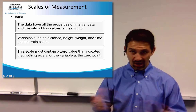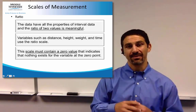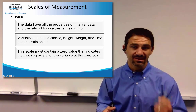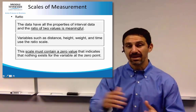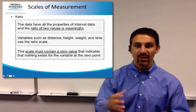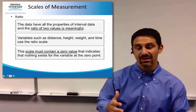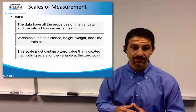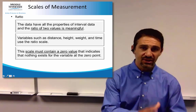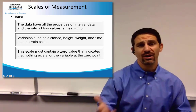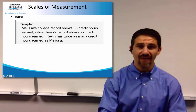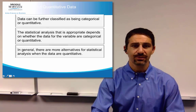When zero actually means that something doesn't exist, that is ratio data. A good example is money — if you have zero dollars, it's the absence of money. We know $1 is different from $0, we know one is higher than the other, and zero means the absence of money, so that makes it ratio. Understanding nominal, ordinal, interval, and ratio determines what you can really do with the data. Another example: if you have zero credit hours, it means you haven't actually taken a class here at MTSU.